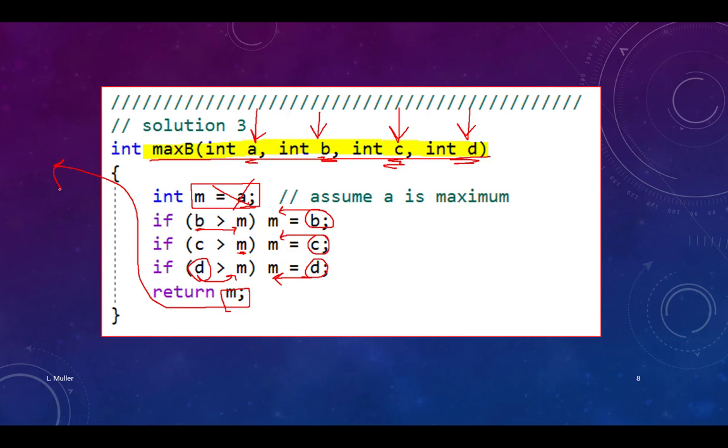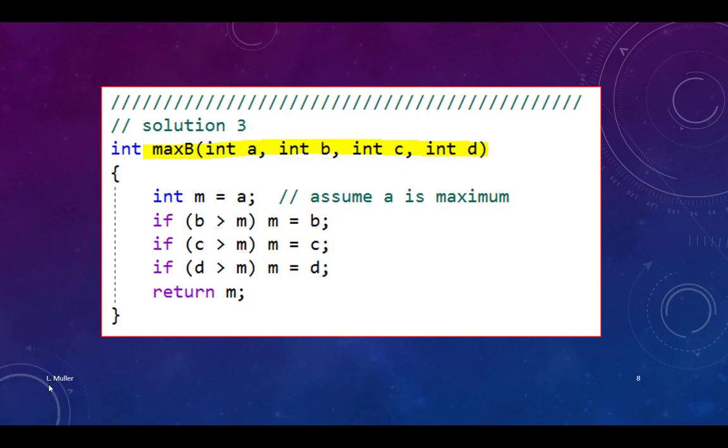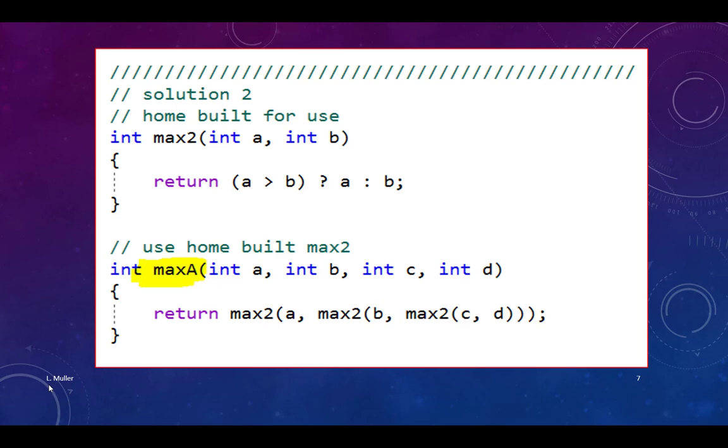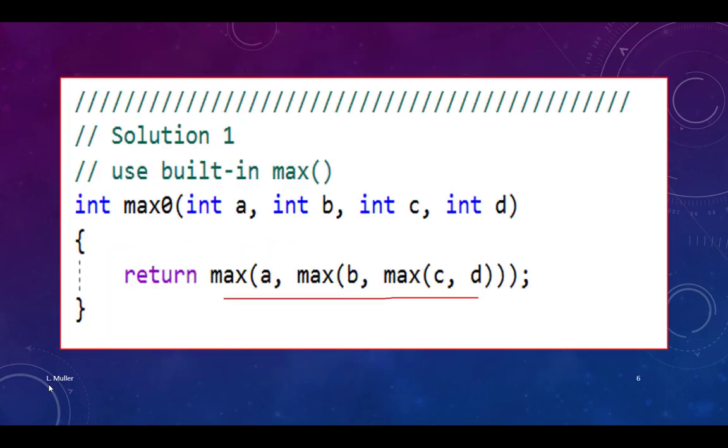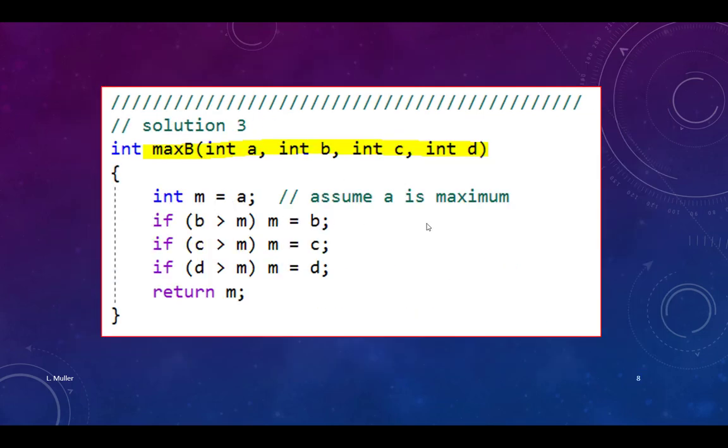So now I have a third solution. And once again, when you look at these solutions, you go back and you ask which is easier to understand, which is easy to implement. And in terms of syntax errors, this looks like it's easier to get going right away. This one looks like more typos are possible. And logic errors because what if I accidentally put d in here twice and I didn't notice it?